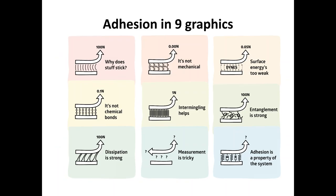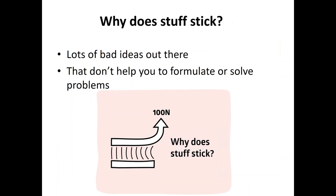Adhesion science is big and complex. I want to grasp it in just nine graphics — sometimes we need to see the big picture to understand the little picture. There are lots of bad ideas out there, and I get upset about this because they don't help you formulate or solve problems. So we really need to know why does stuff stick. These are simple graphics — the units are newtons per metre but the 'per metre' didn't look good on the slide.